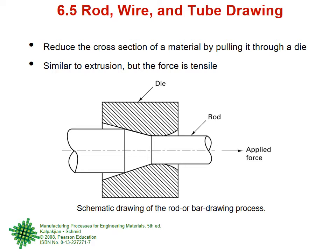Drawing is the process of reducing the cross-section of a material by pulling it through a die — similar to extrusion, but the force is tensile. Looking at the diagram: it is exactly the same setup as extrusion — the container, the die, and the billet material. If a compressive force is applied by a press it is extrusion; if a pulling force is applied from the exit side, it is wire drawing. The only difference is tensile force instead of compressive — pulling instead of pushing.